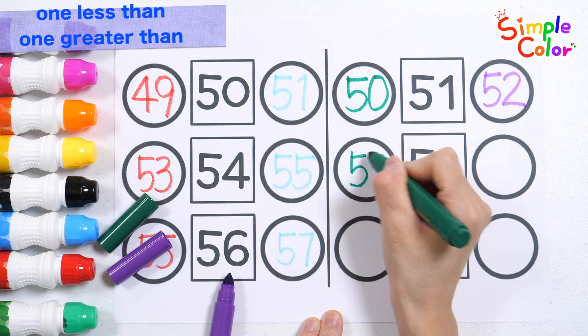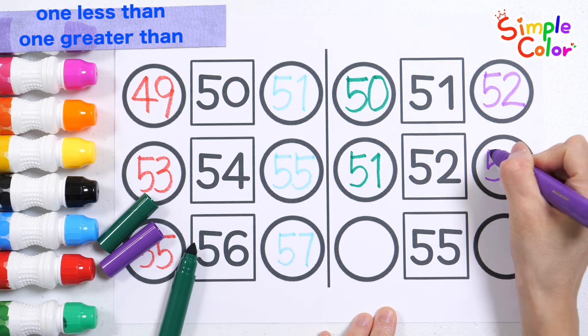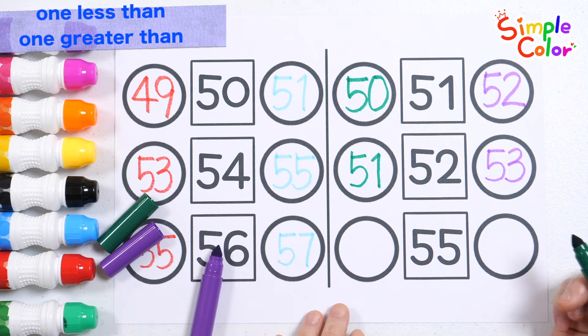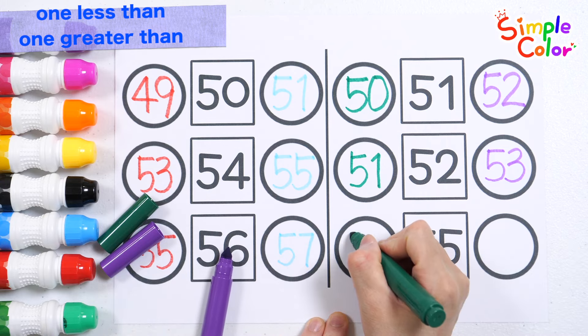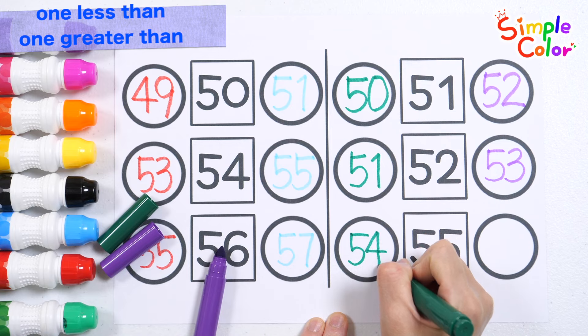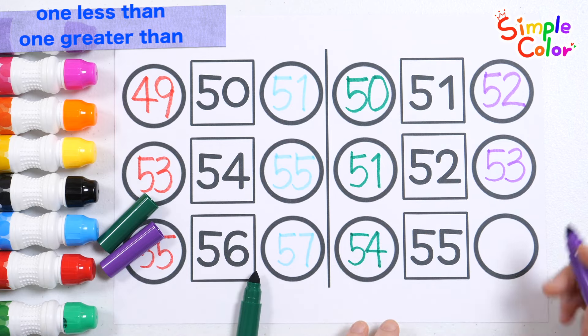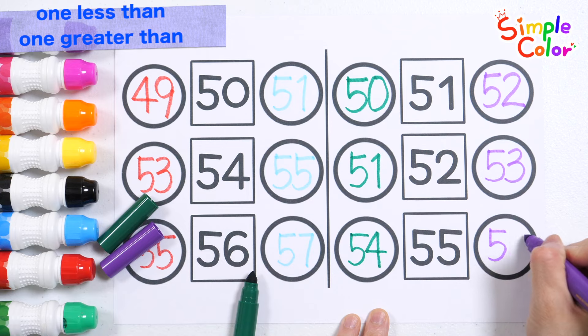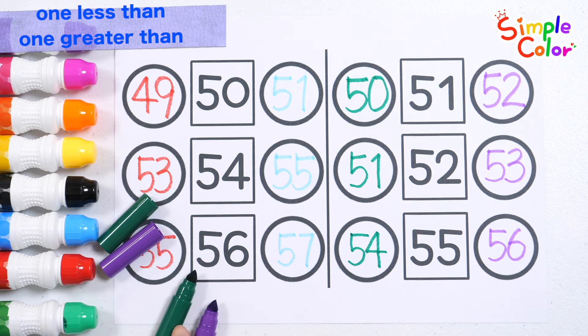What is one bigger number? Fifty-three. Good job. The number one less than 55. Fifty-four. What is one bigger number? That's right, fifty-six.